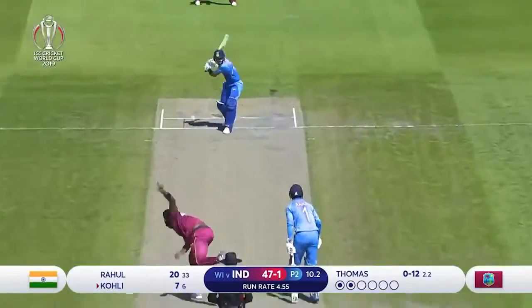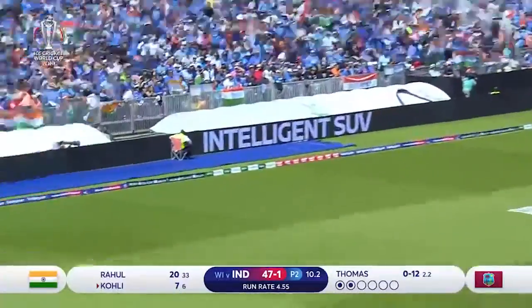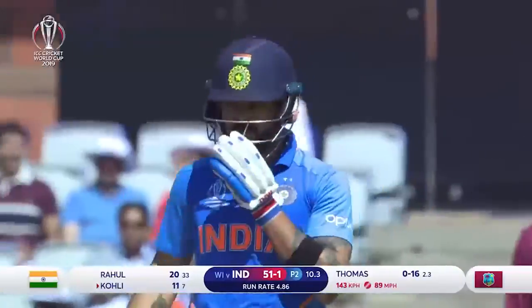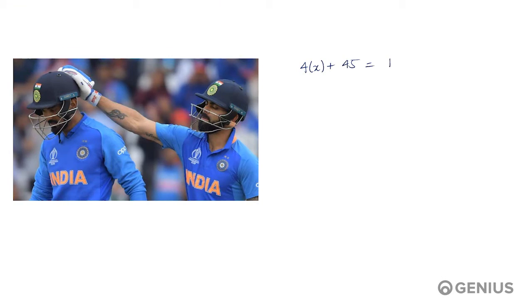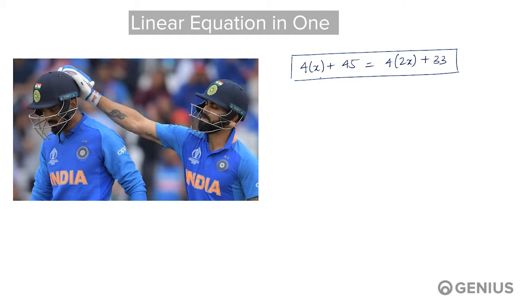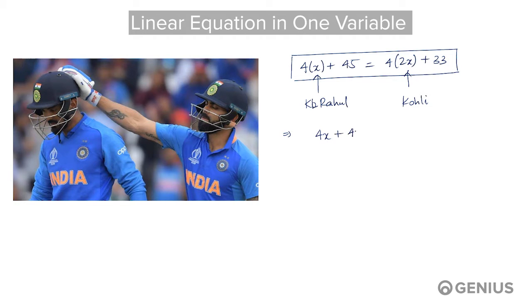Kohli hit twice the number of fours as KL Rahul. However, both of them scored the same number of runs, which can be expressed as 4x + 45 = 4 × (2x) + 33. This is also a linear equation in one variable, where x is the number of fours hit by KL Rahul and 2x is the number of fours hit by Kohli. If we solve this, we open the brackets to get 4x + 45 = 8x + 33.